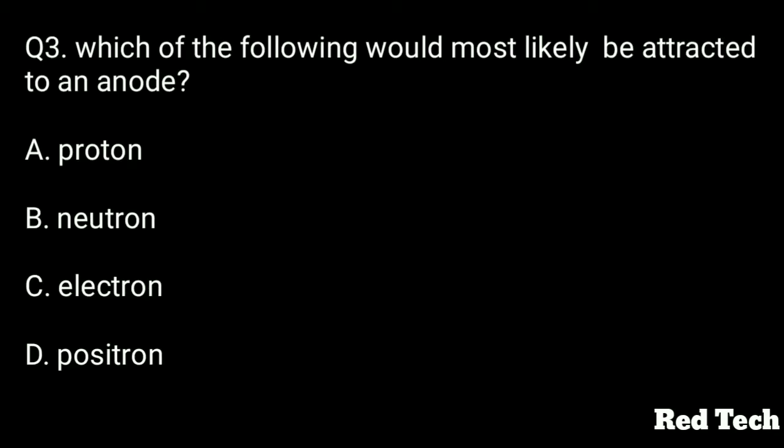Question number three: Which of the following would most likely be attracted to an anode? Options are: proton, neutron, electron, or positron. The right answer is electron because the anode is positively charged and the electron is negatively charged.